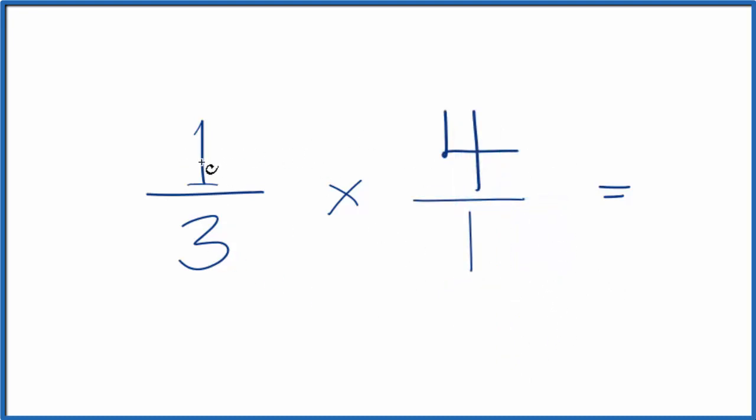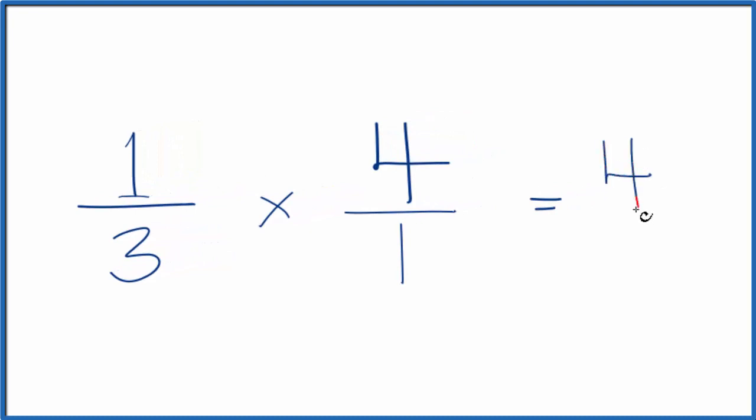That means we can multiply the numerators, one times four, and then the denominators, three times one, and we end up with four-thirds.